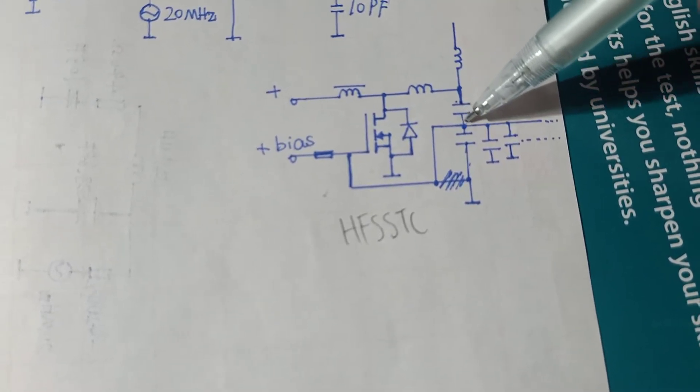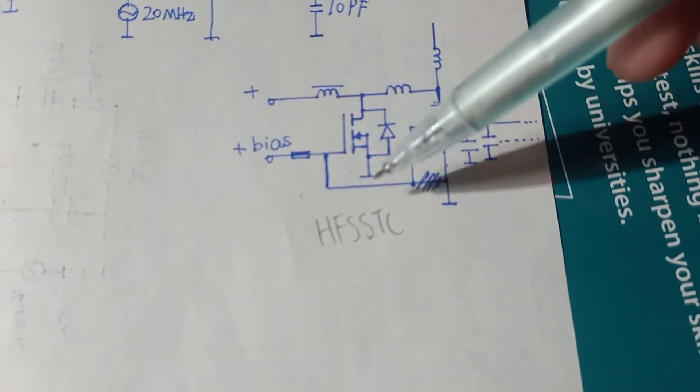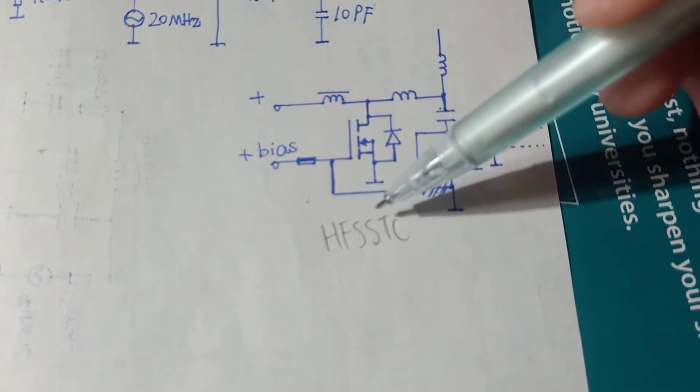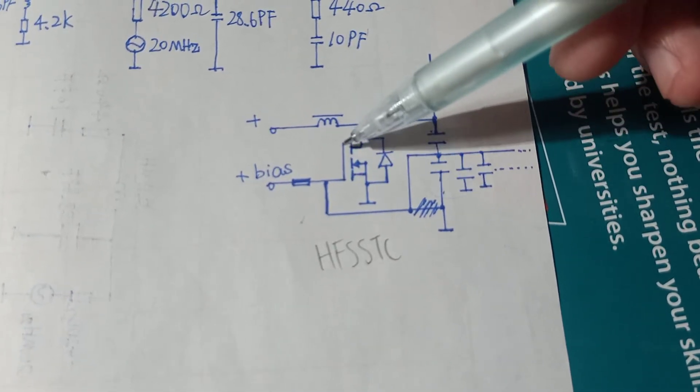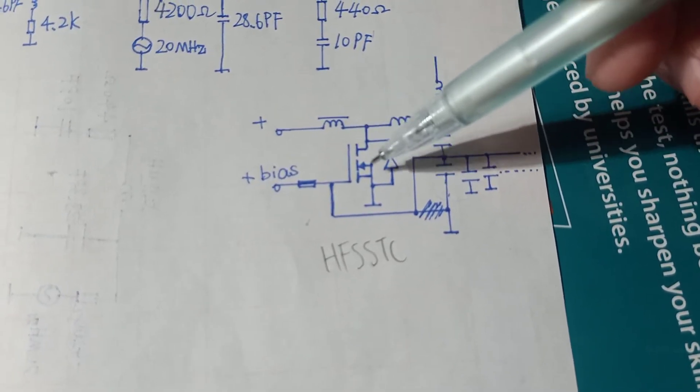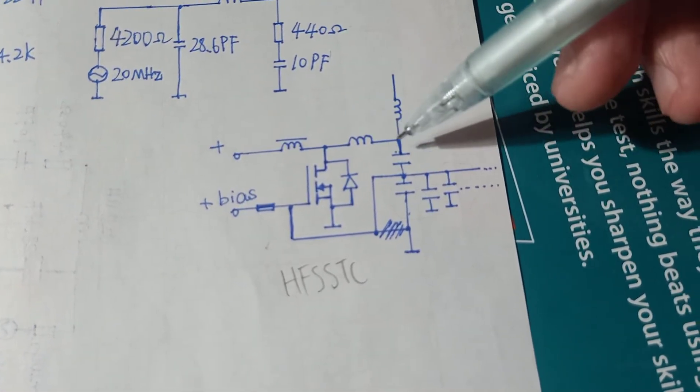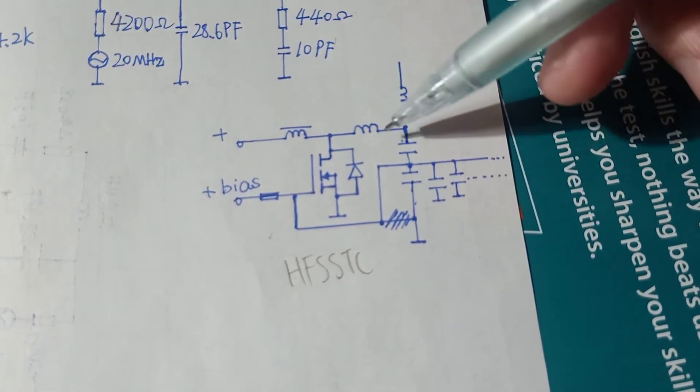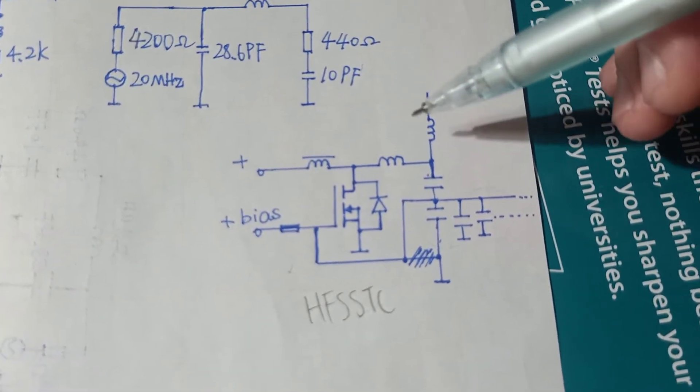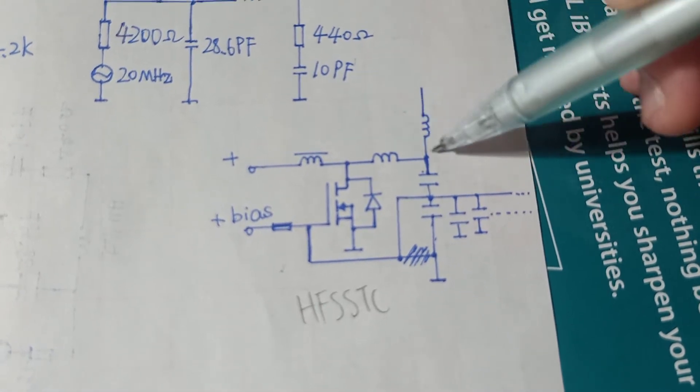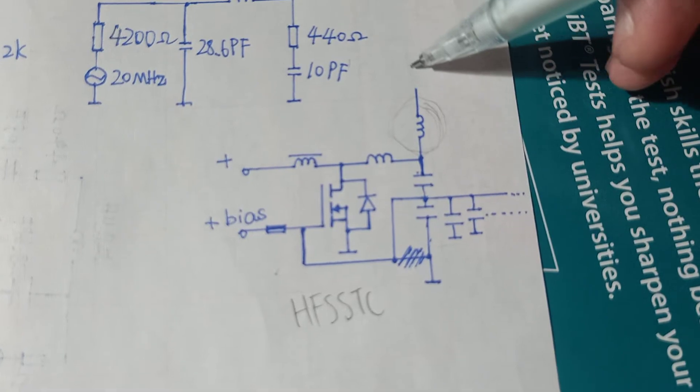And the resonant tank circuit is looking like this: through the coil, through the capacitor, and through the divider capacitors. Also, this capacitor is in parallel with the G-S capacitor in the MOSFET. And through this is the resonant tank circuit. And this circuit has a matching coil, impedance matching coil here.